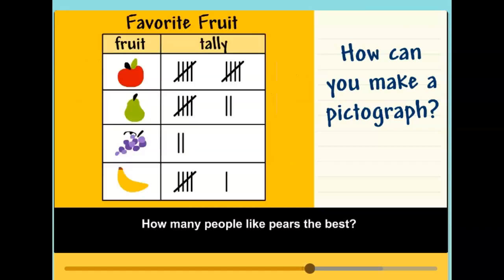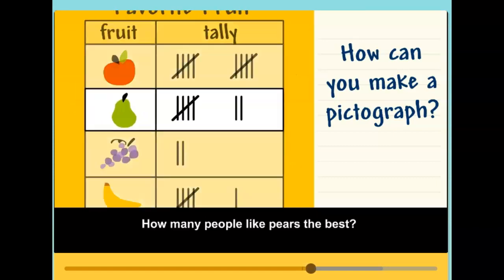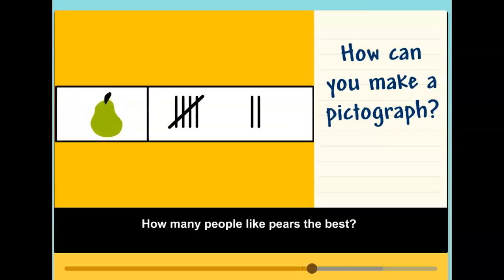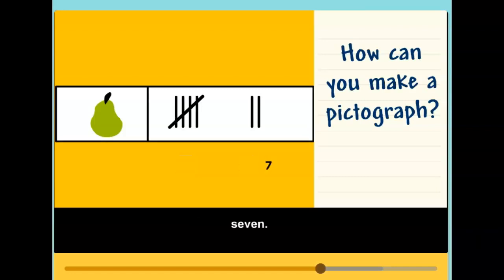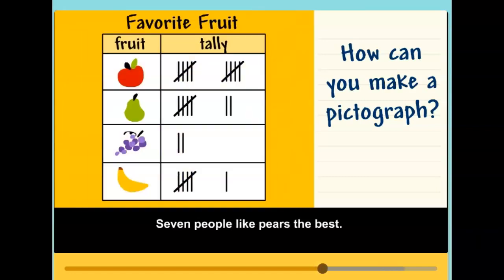How many people like pears the best? Start with five, then count on two. Six, seven. Seven people like pears the best.